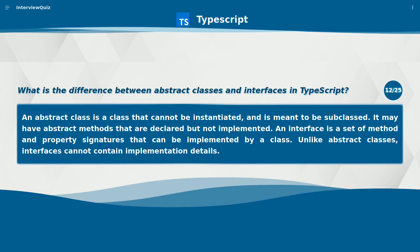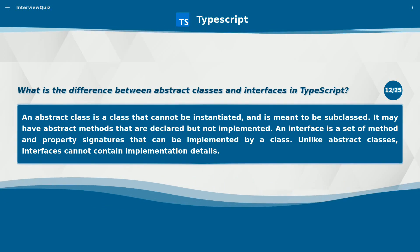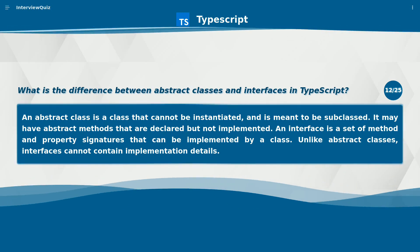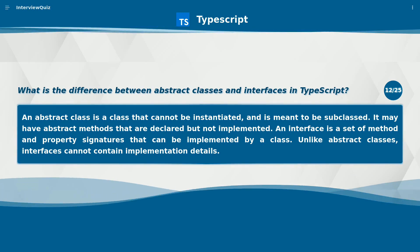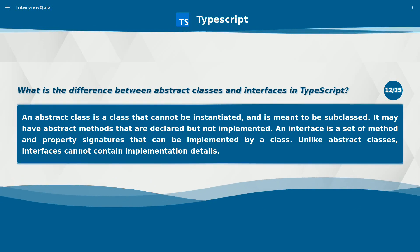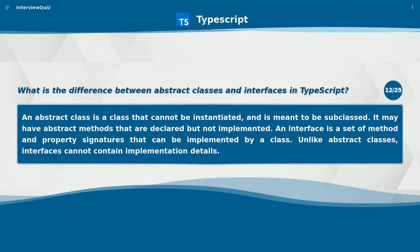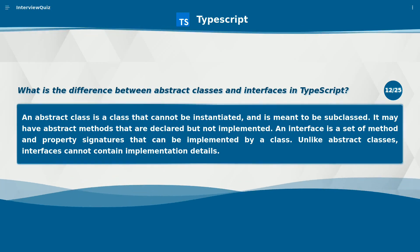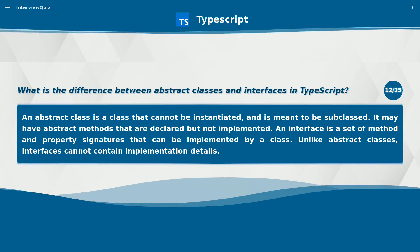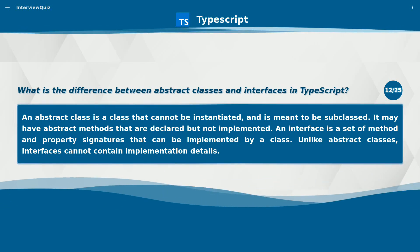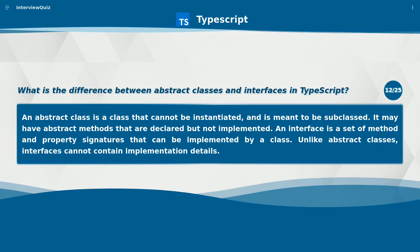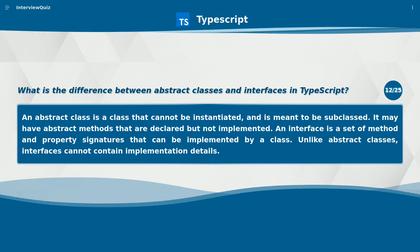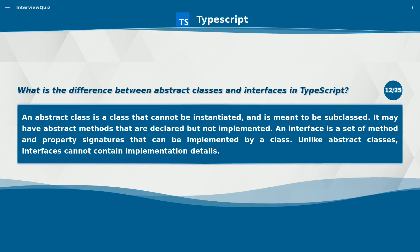What is the difference between abstract classes and interfaces in TypeScript? An abstract class is a class that cannot be instantiated and is meant to be subclassed. It may have abstract methods that are declared but not implemented. An interface is a set of method and property signatures that can be implemented by a class, but unlike abstract classes, interfaces cannot contain implementation details.